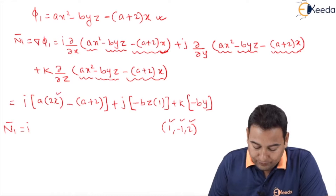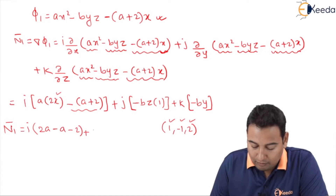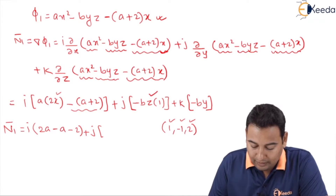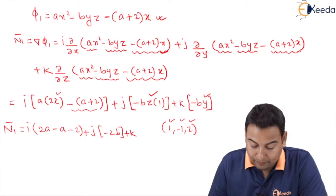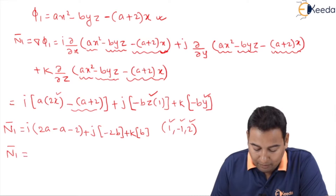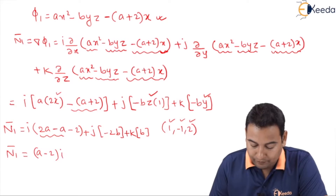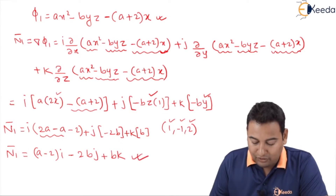Substituting x=1, y=−1, z=2: the i component gives 2a minus (a+2), which simplifies to (a−2). The j component: −bz = −b(2) = −2b. The k component: −by = −b(−1) = +b. So n1 bar = (a−2)i − 2bj + bk. This is our first normal vector.